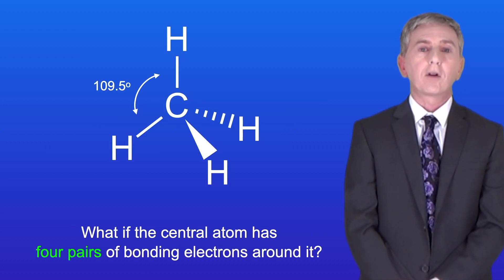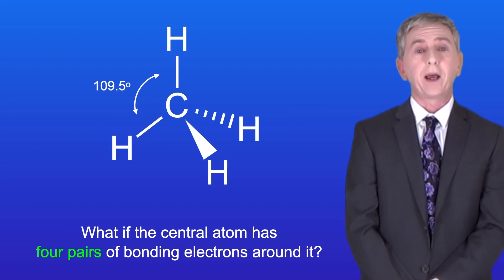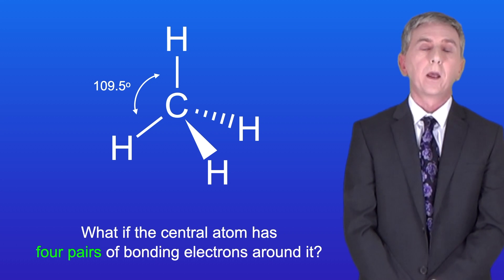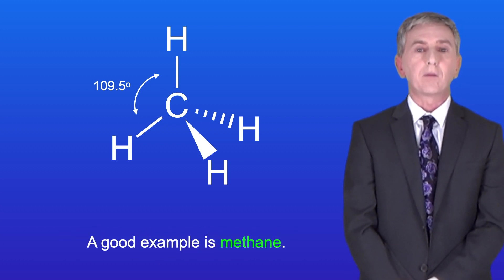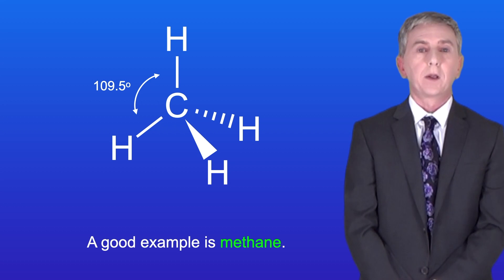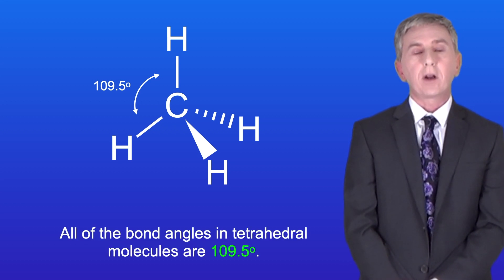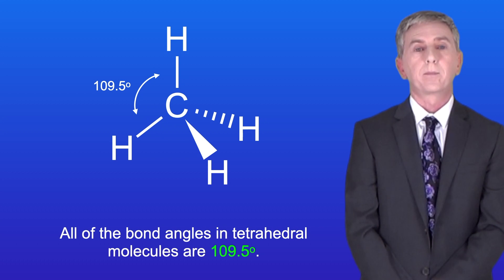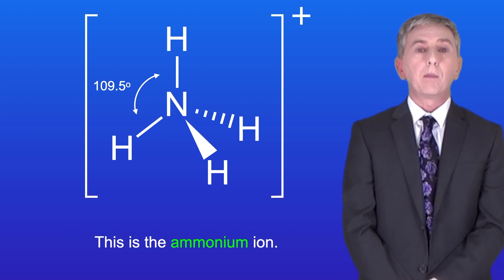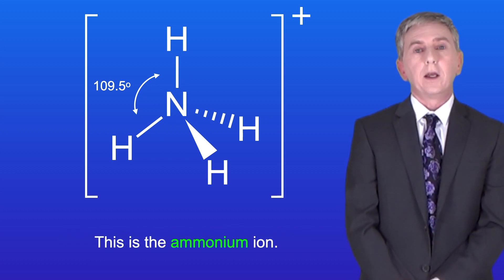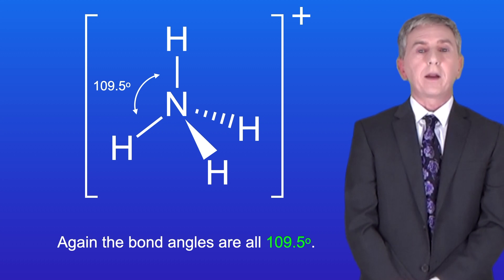If the central atom has four pairs of bonding electrons around it, we get a tetrahedral molecule. A good example is methane, and all bond angles in tetrahedral molecules are 109.5 degrees. Another tetrahedral example is the ammonium ion, where the bond angles are again all 109.5 degrees.